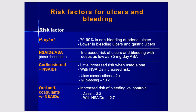Risk factors: H. pylori is present in 70 to 90% of non-bleeding duodenal ulcers and is lower in bleeding and gastric ulcers. NSAIDs and aspirin carry a dose-dependent increased risk of ulcers and bleeding, with doses as low as 75 mg per day. Corticosteroids alone add little risk, but the combination of NSAIDs and steroids increases risk significantly. Anticoagulants increase bleeding risk with warfarin alone at 3.3-fold and combined with NSAIDs at 12.7-fold.